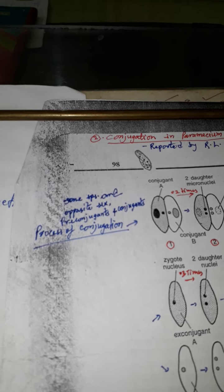Dear students, conjugation in Paramecium की जो process है, वो scientist R. L. Korpal ने year 1982 में Paramecium caudatum में report की थी। इस process में same species और opposite sex के two Paramecia एक दूसरे के contact में आते हैं, तब इनके लिए pre-conjugants कहते हैं। और जब यह एक दूसरे से attached हो जाते हैं, तब भी इनके लिए pre-conjugants कहते हैं।